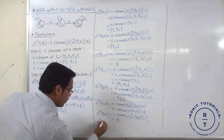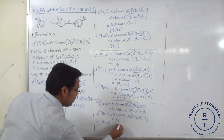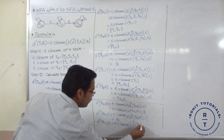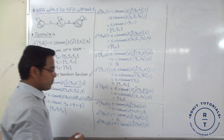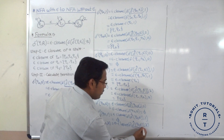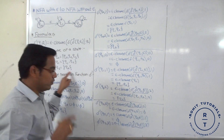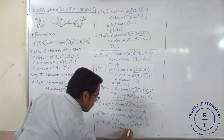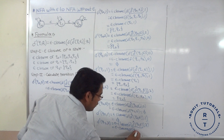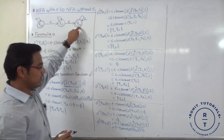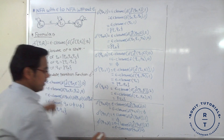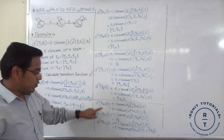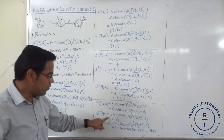And last, transition function of Q2 with input 2 equals epsilon closure of delta cap of Q2 with epsilon, input 2. The epsilon closure of Q2 is {Q2}. The transition is Q2 with input 2, and the epsilon closure of Q2 is Q2. So that is why the answer is Q2. Q2 for input 0, 1, 2 is completed.